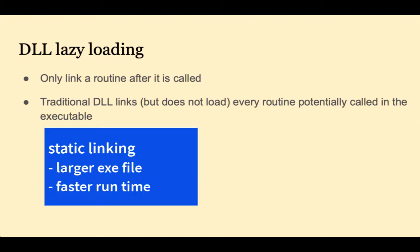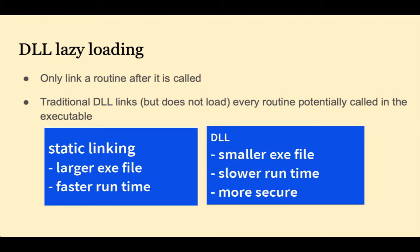In summary, a statically linked approach has an executable containing library object code, which makes the executable larger than DLL. In DLL, the executable will be smaller, but DLL is slightly slower because the system has to find the libraries at runtime. This is worth the reduction in speed for security reasons — the library fetched will be the most recently updated and assumably the most secure code.